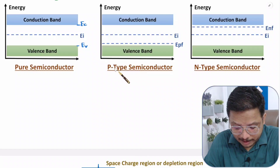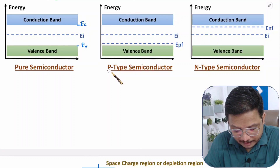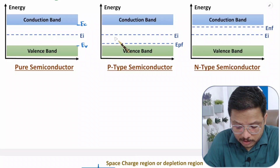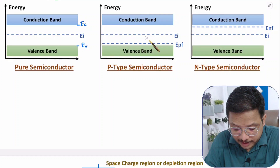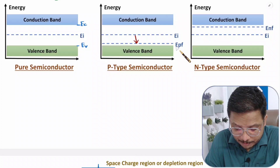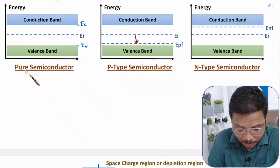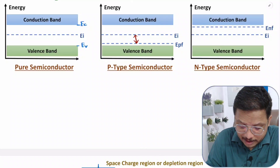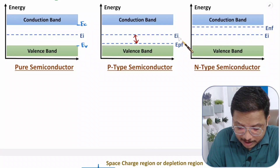By adding trivalent impurities, you will be making P-type semiconductor. So in P-type semiconductor, if you observe, this Fermi energy level is getting shifted towards the valence band side. So EPF, that is Fermi energy of P-type, is getting shifted from EI to EPF compared to pure semiconductor. If you want to understand how much shifting is happening, that will be EI minus EPF.